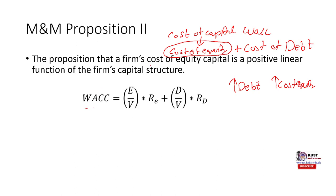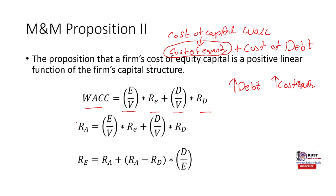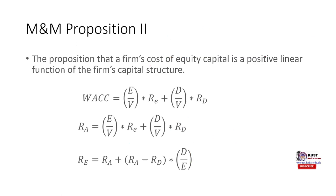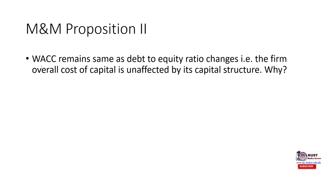We know that WACC equals the weight of equity times cost of equity plus the weight of debt times cost of debt. Rearranging this equation, we get that cost of equity equals the required rate of return plus (required rate of return minus cost of debt) times the debt-to-equity ratio. If there are no taxes, then we calculate cost of equity using this equation. But WACC would remain the same.